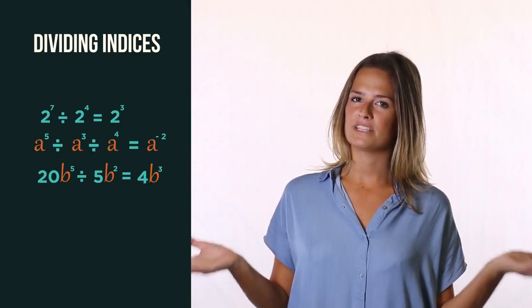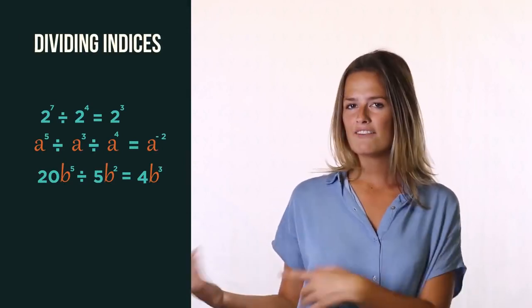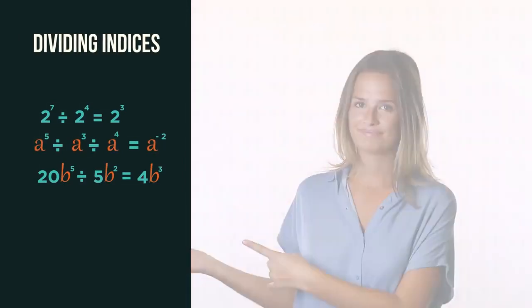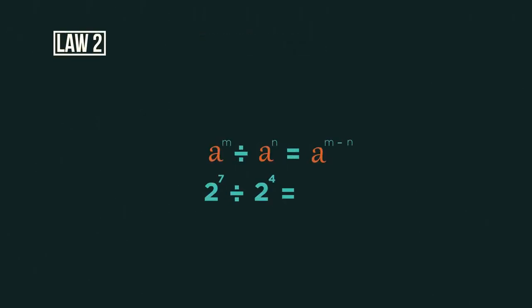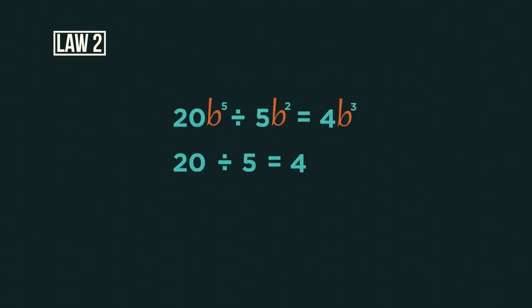So what happens when we divide with indices? Have a look and see if you can work it out. When we divide indices we subtract the powers, but again the base must be the same. So for this one we do the numbers first and subtract the indices second.